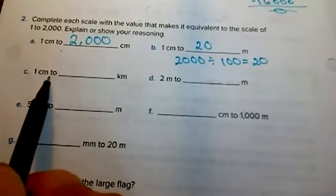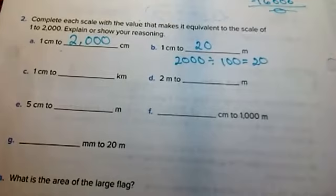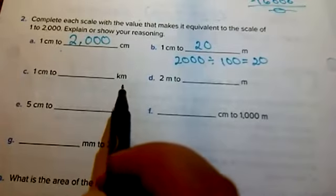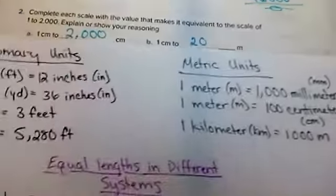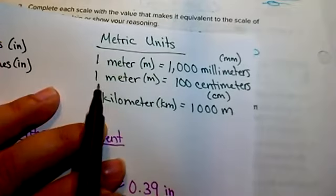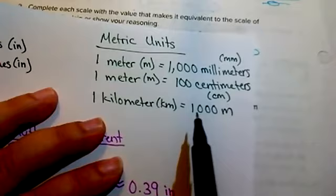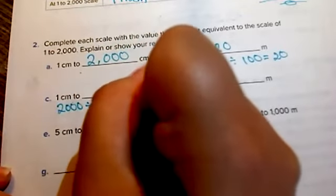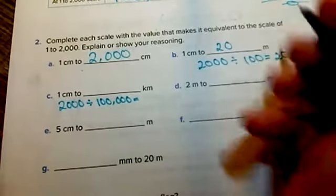For letter C — one centimeter to blank kilometers — a kilometer equals 1,000 meters and one meter equals 100 centimeters, so one kilometer is 100,000 centimeters. We divide 2,000 by 100,000, giving 0.02 kilometers — two hundredths of a kilometer.